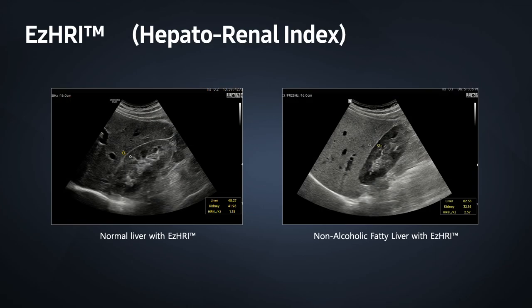Hepatorenal Index (HRI) is a tool used to quantify fat in the liver by comparing echogenicity between liver parenchyma and renal cortex. EZ-HRI automatically places the appropriate ROI cursors on liver parenchyma and renal cortex in order to calculate the HRI ratio value.